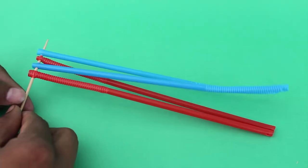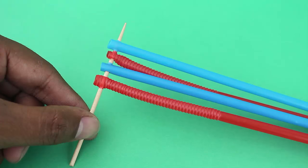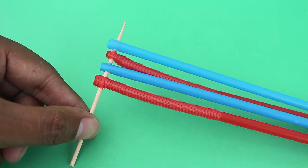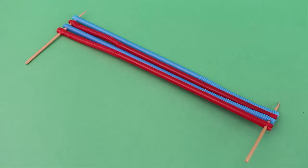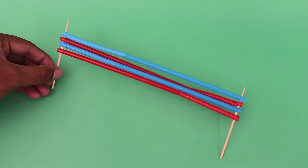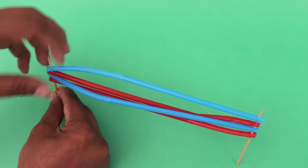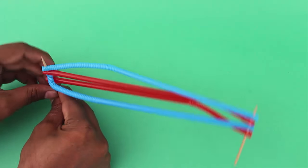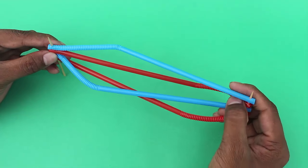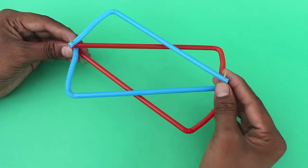Similarly weave the right ends of all four straws in the second toothpick. Now spread and phase out both blue straws and also the red straws to make two quadrilaterals, four-sided figures.